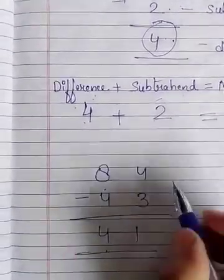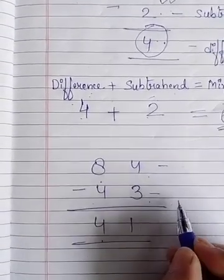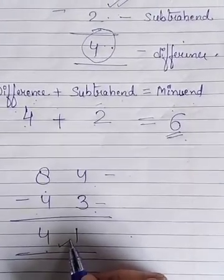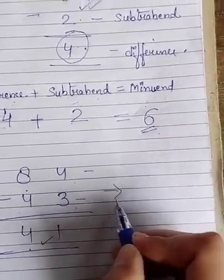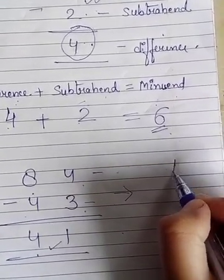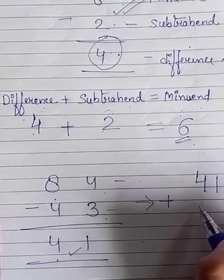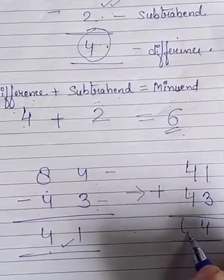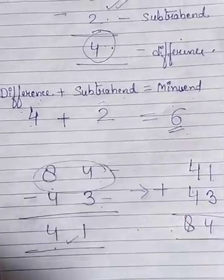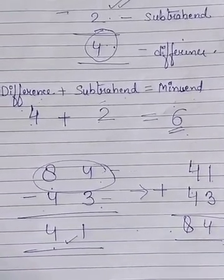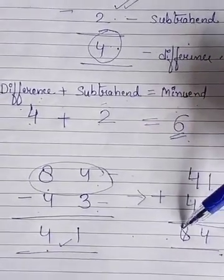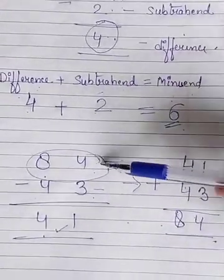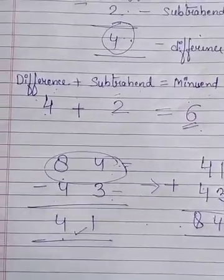84 minus 43 is 41. Here 84 is the minuend, 43 is the subtrahend, and 41 is the difference. For cross-checking whether this answer is correct, we add difference plus subtrahend: 41 plus 43. Then we add these two numbers: 3 plus 1 is 4, and 4 plus 4 is 8, giving us 84. So our answer is correct because it is the same as the minuend.